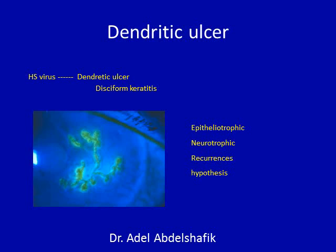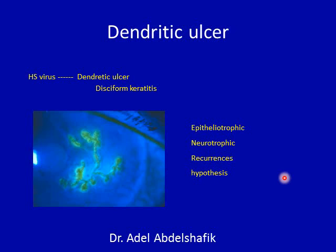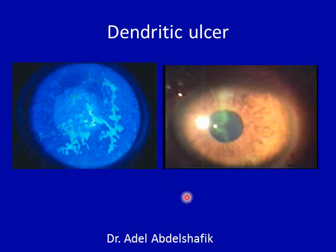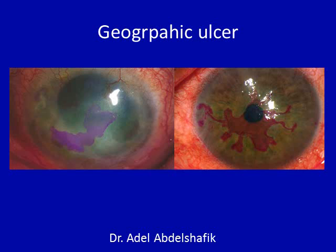A dendritic ulcer is caused by herpes simplex virus and has a very characteristic branching appearance. The virus causes epitheliotropic changes and follows the nerves. The virus lies in the trigeminal ganglion, so recurrences are quite common with stress, fever, or menses, and it is known to leave the cornea hypoesthetic. On examination we see this characteristic branching appearance with terminal knobs. If the patient's resistance is weak or if the patient is receiving topical steroids, there is a great risk the ulcer will change into a geographic ulcer — a wide area of ulceration with branching at the ends and terminal knobs.